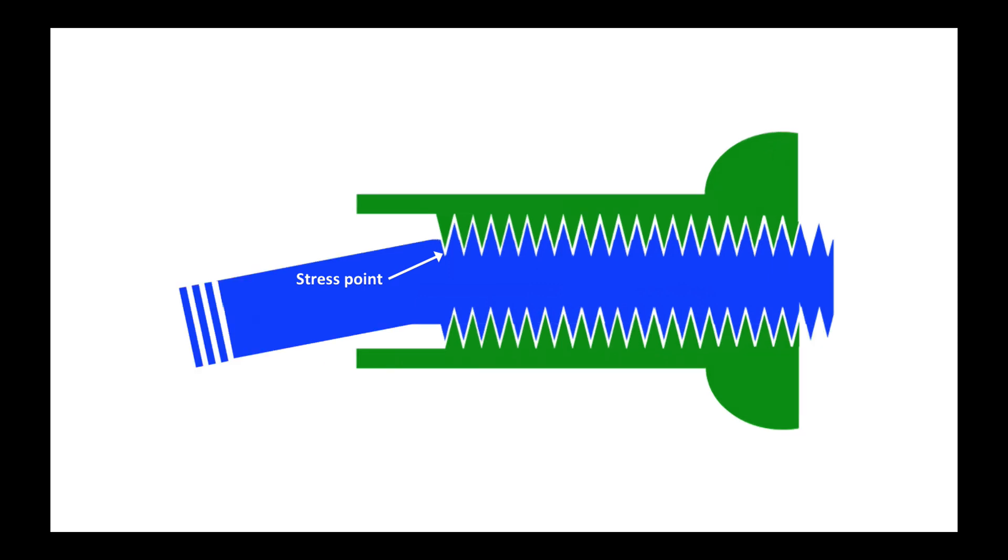And that stress point will be made worse if the spoke has to go off at an angle, which is usually the case. We can see obviously there's going to be quite a bit of pulling and yanking on the spoke where it's the thinnest at the stress point.